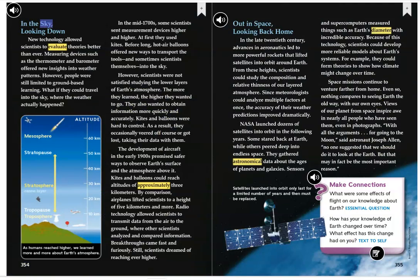In the sky, looking down. New technology allowed scientists to evaluate theories better than ever. Measuring devices such as the thermometer and barometer offered new insights into weather patterns. However, people were still limited to ground-based learning. What if they could travel into the sky, where the weather actually happened?